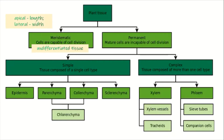Now let's go to the permanent plant tissue. These are mature cells that are already incapable of cell division. They can be classified as simple or complex. Simple tissues are composed of a single cell type, while complex tissues are composed of more than one cell type.